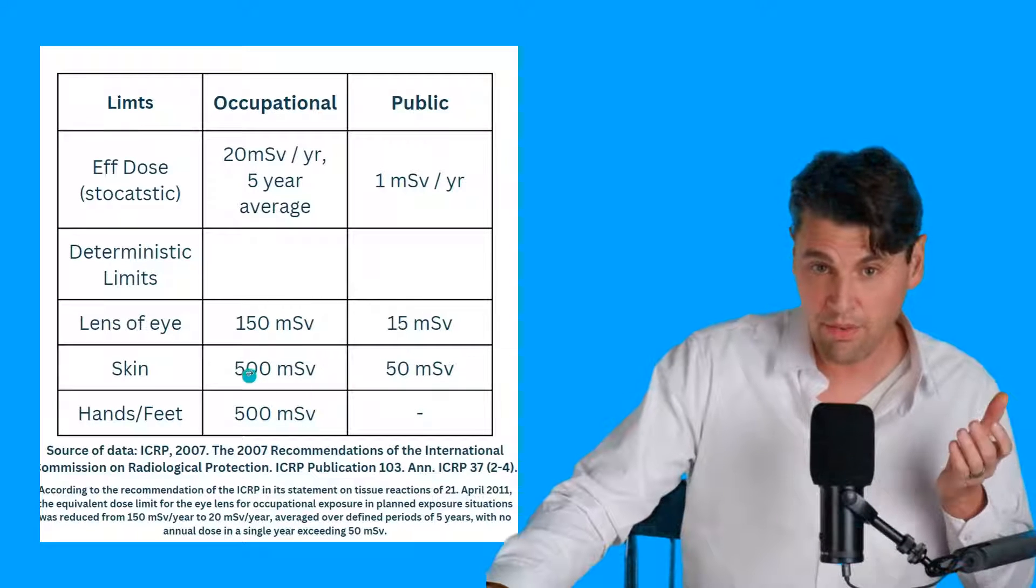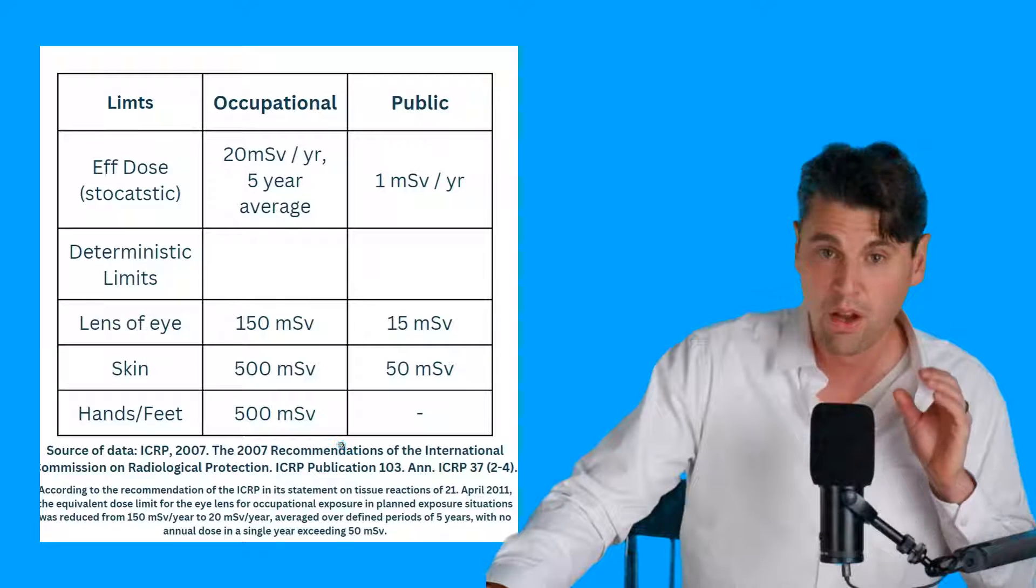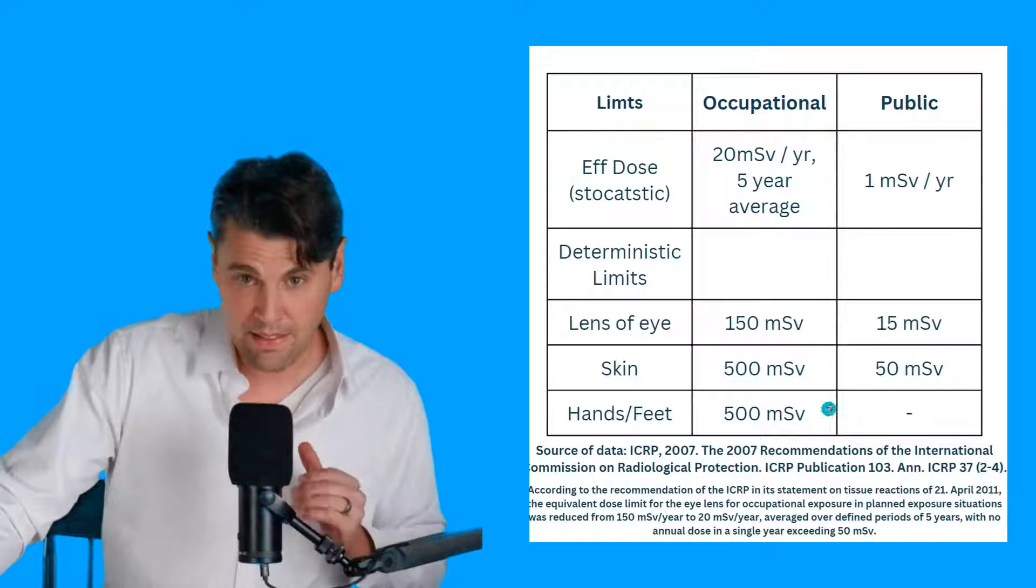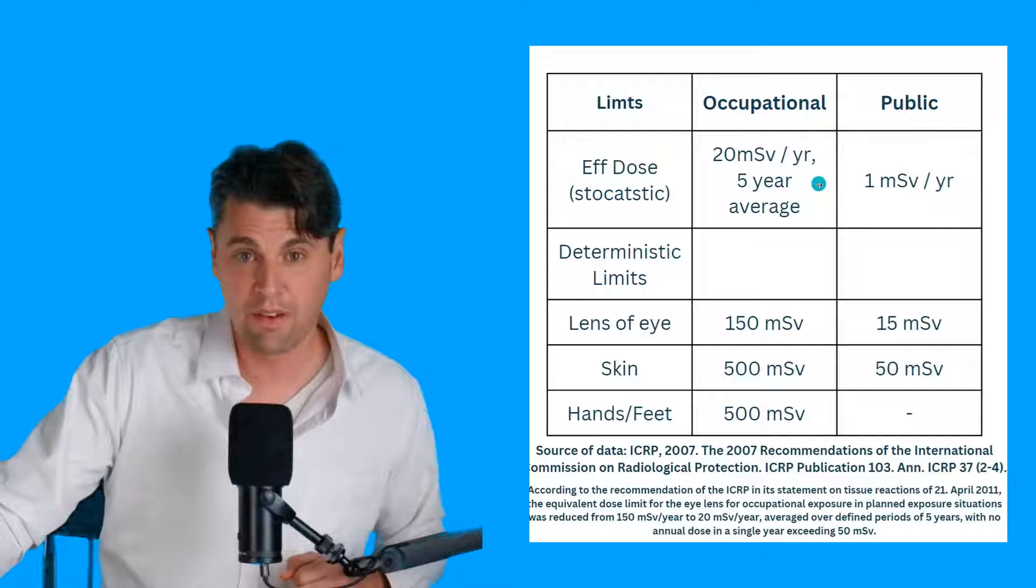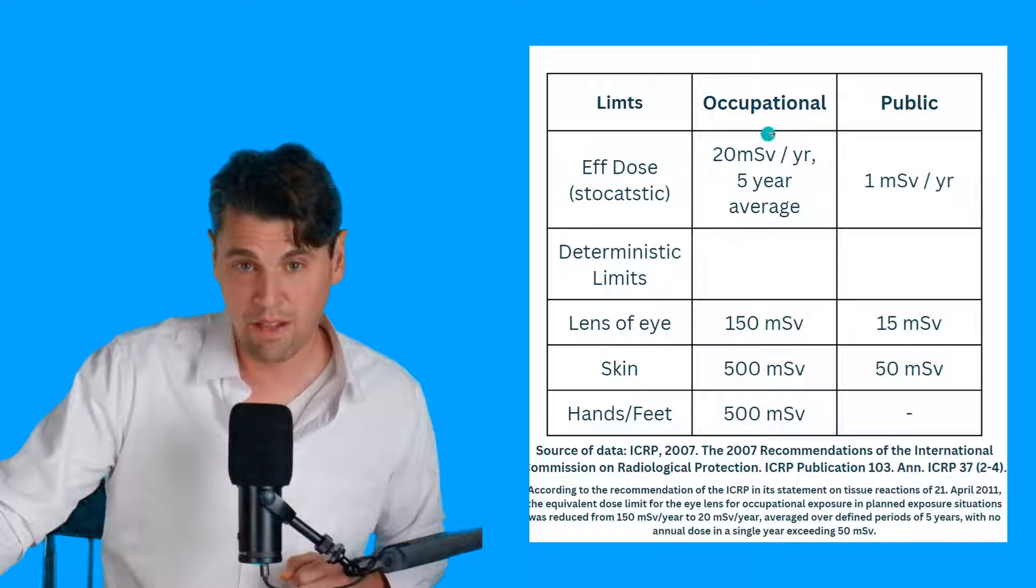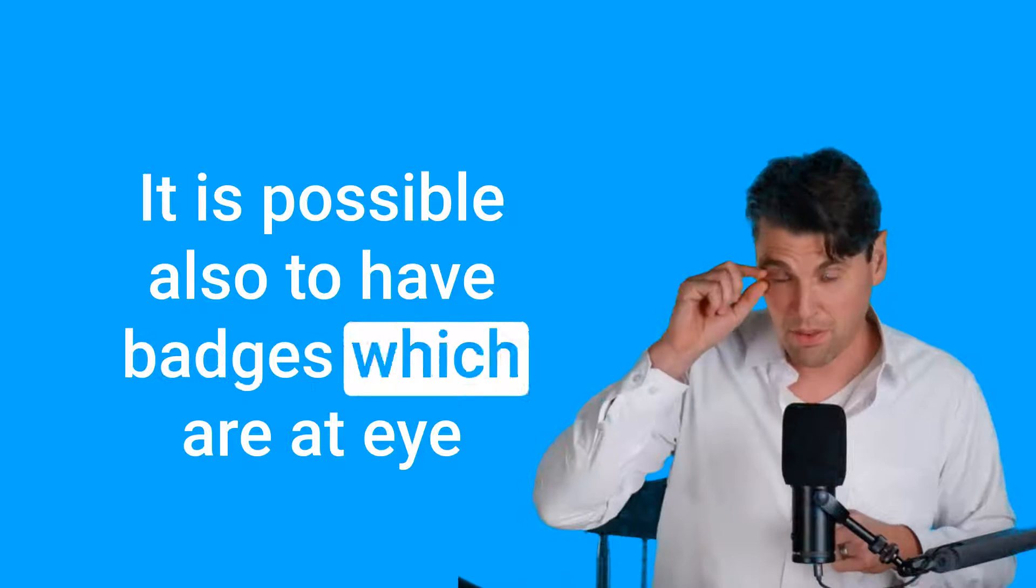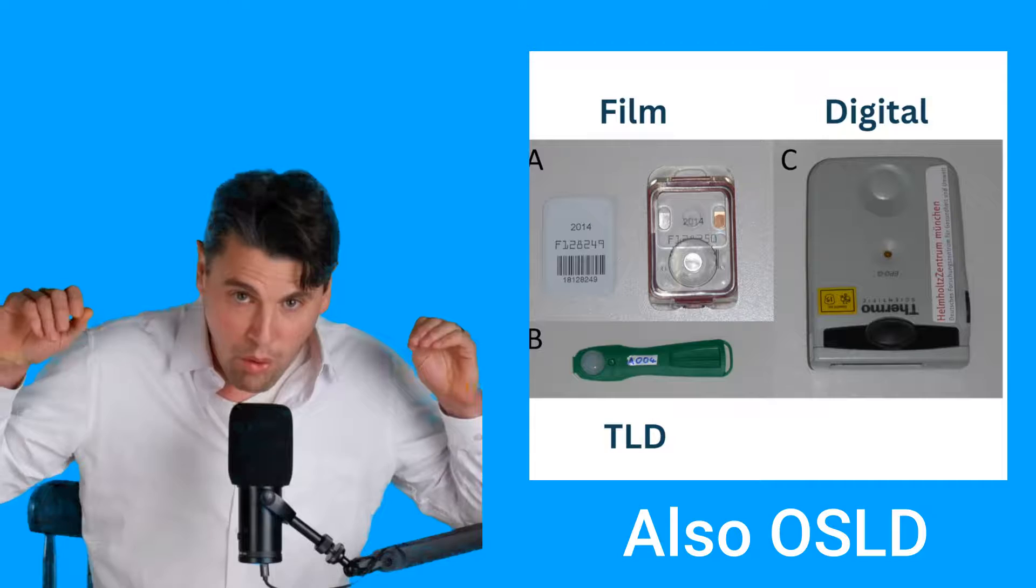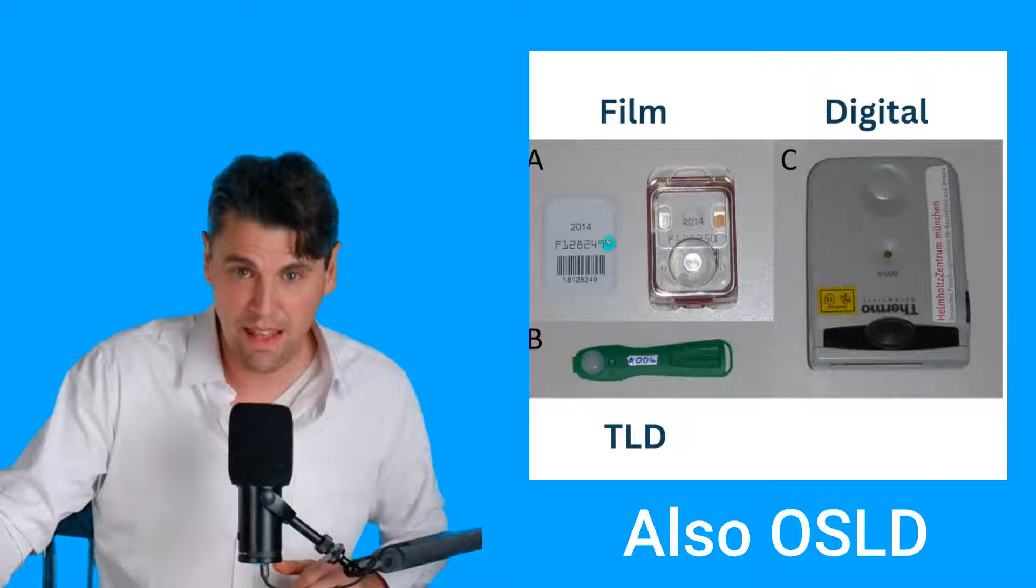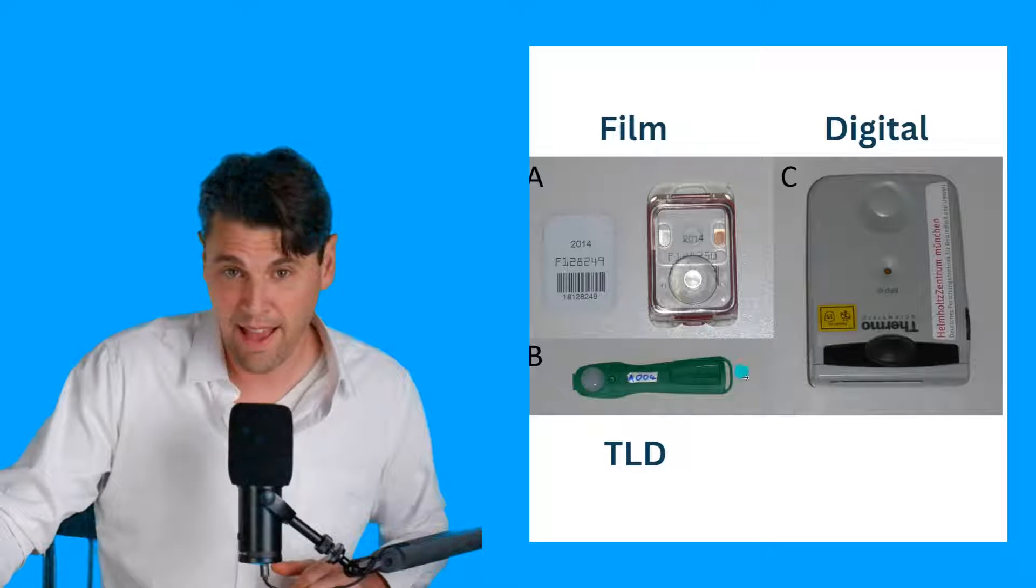So there's occupational limits based on these deterministic effects of 150 millisieverts per year for the lens of the eye. Additionally, the skin of 500 millisieverts per year and the hands and feet of 500 millisieverts per year for the occupational dose. That's from the ICRP in 2007. More recently, based on analysis of stochastic effects, there's been a recommendation for occupation dose to the eye of 20 millisieverts per year, averaged over a five-year period. So it is possible also to have badges which are at eye level and can monitor the radiation dose at eye level. We're going to talk about the different types of badges, namely film badges, PLD badges, and digital badges. This is one of those that could go at eye level.